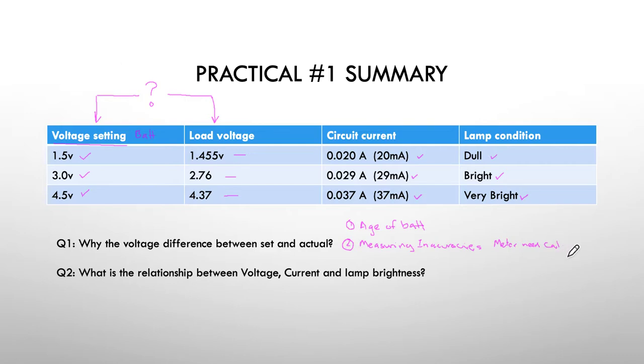So they need some cal is probably what's going on. The next question is what is the relationship between voltage, current, and lamp brightness?